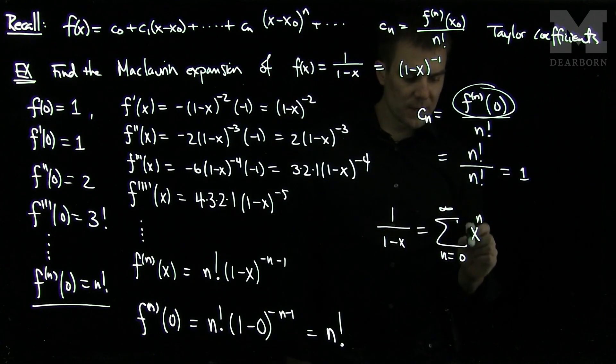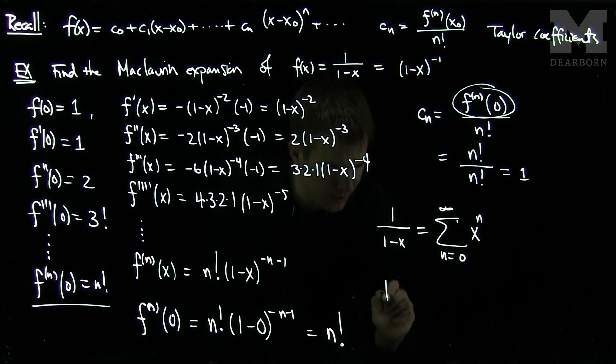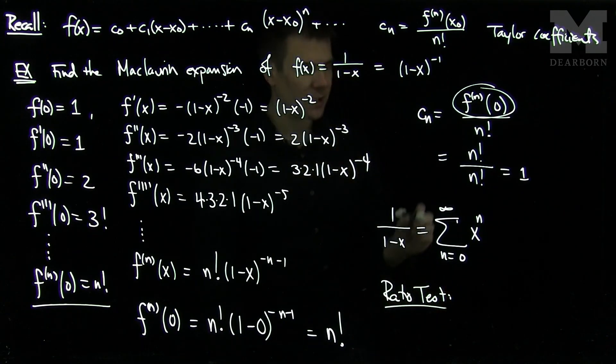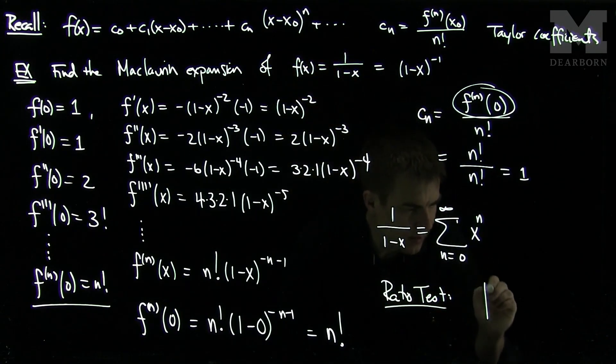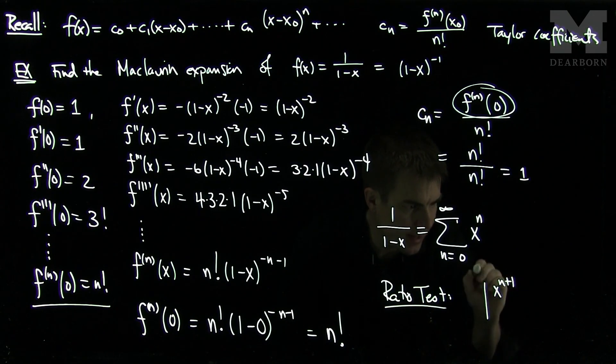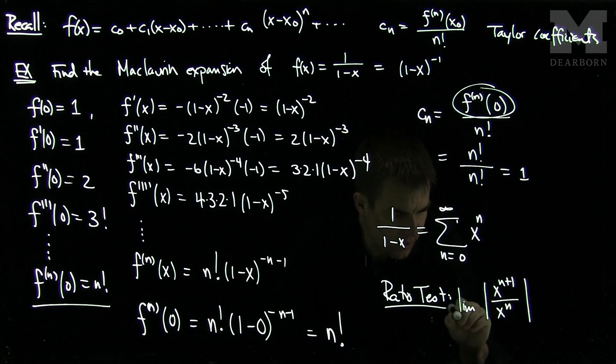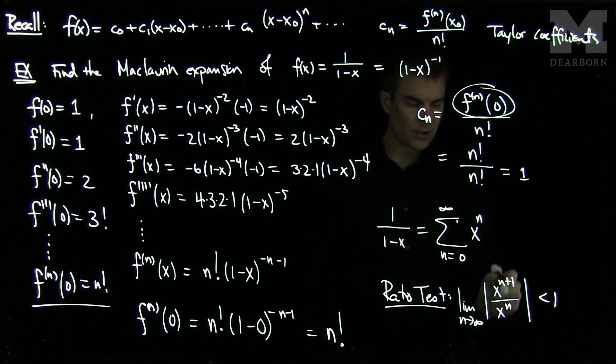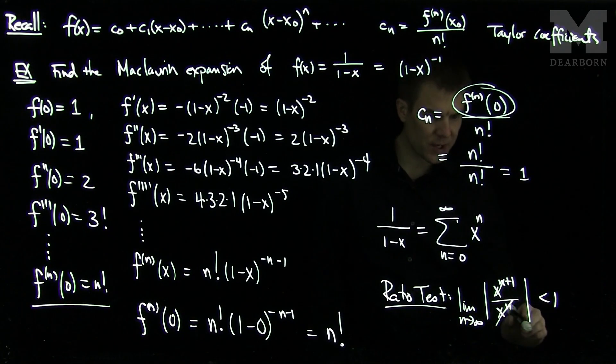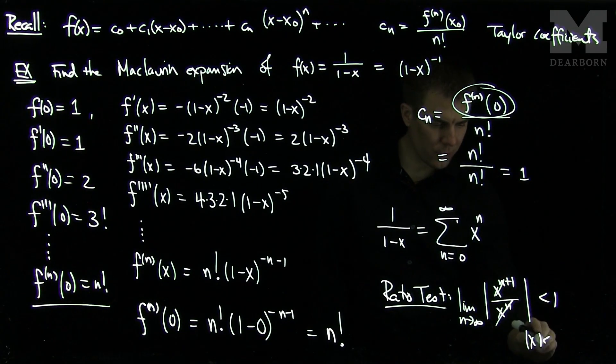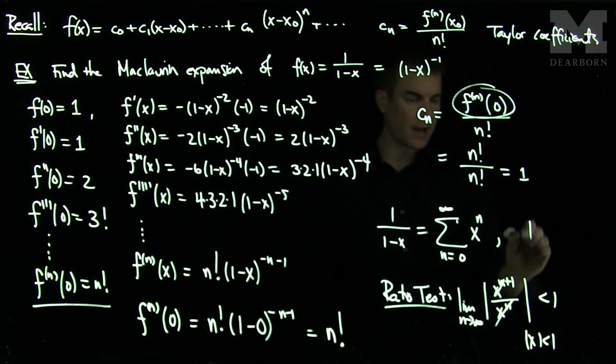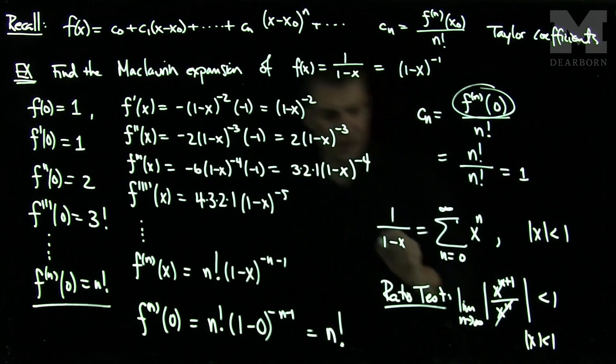Now, we can see by the ratio test, so the ratio test tells us that the absolute value of x to the n plus 1, that's my n plus first term, over x to the n, the limit as n tends to infinity has to be less than 1 for this to converge. And so we see that the x to the n's will cancel out, and so we see that this convergence will occur only if x is less than 1 in absolute value. So this is a valid representation of the function 1 over 1 minus x if x is less than 1 in absolute value.